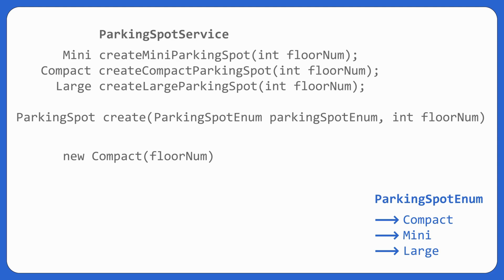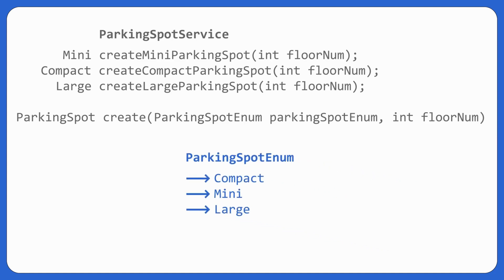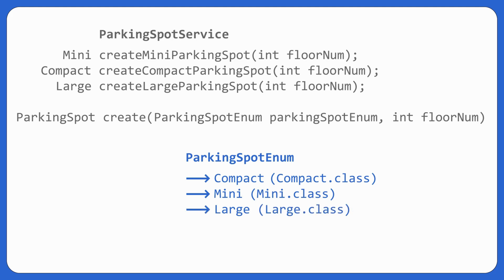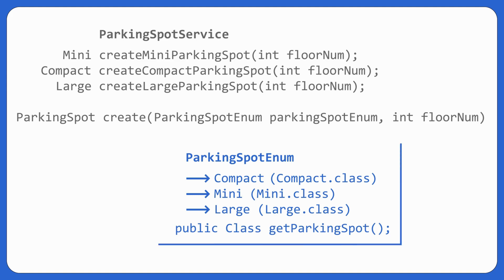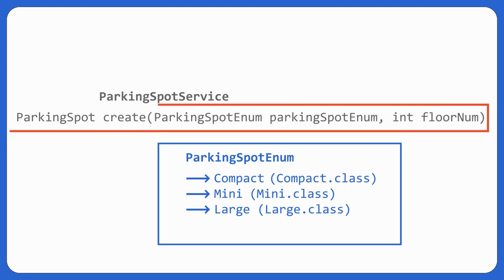A second approach is to give the enumeration class itself the responsibility to return the class of the parking spot. Then our switch case statement goes away and we simply get the class whose object we want to create. Compact returns compact.class, mini returns mini.class, large returns large.class. The enum method would be called `getParkingSpot()`. This is how our parking spot enum is created, and our `create` method becomes quite simple — no switch case statements needed.